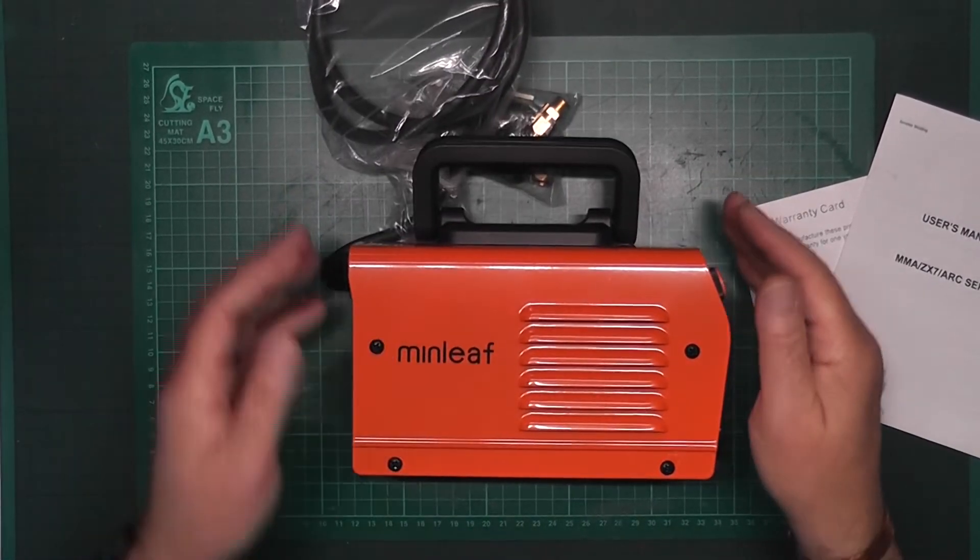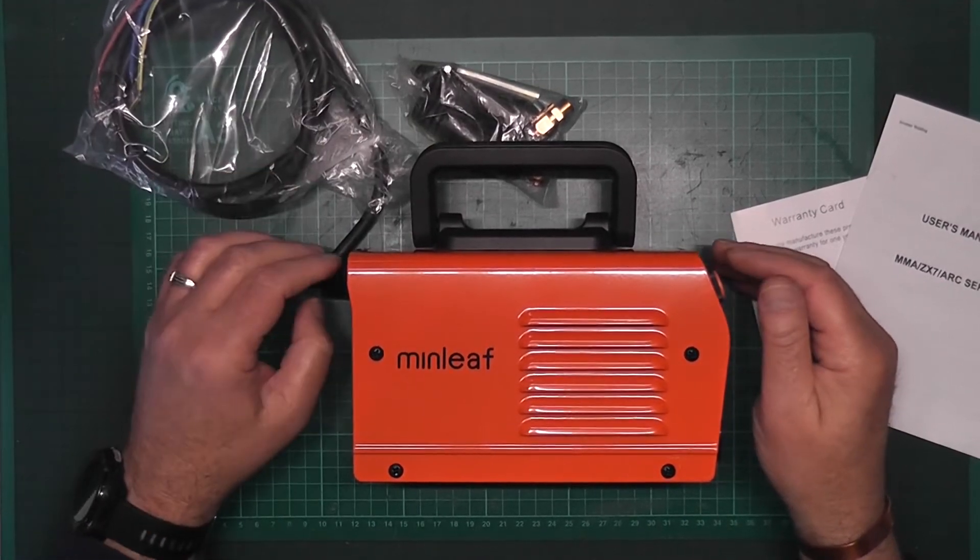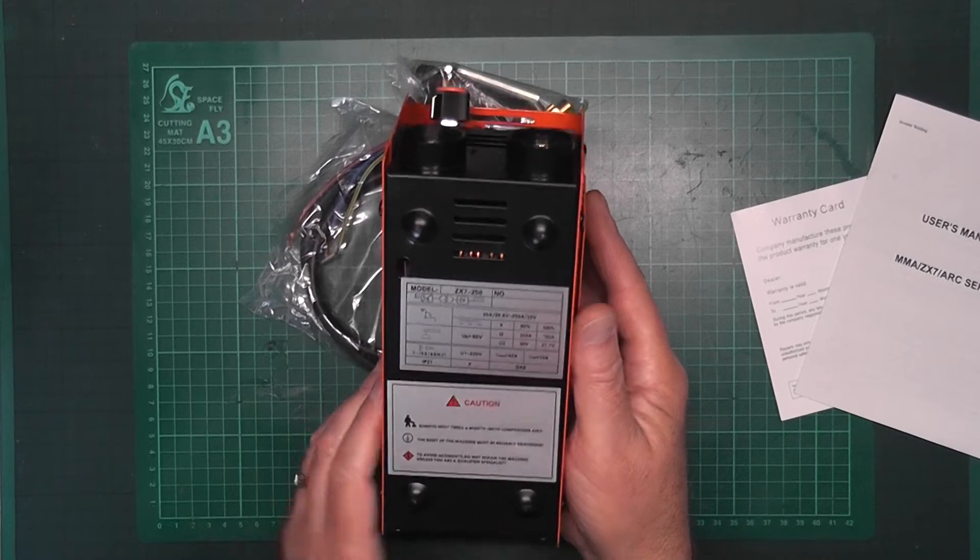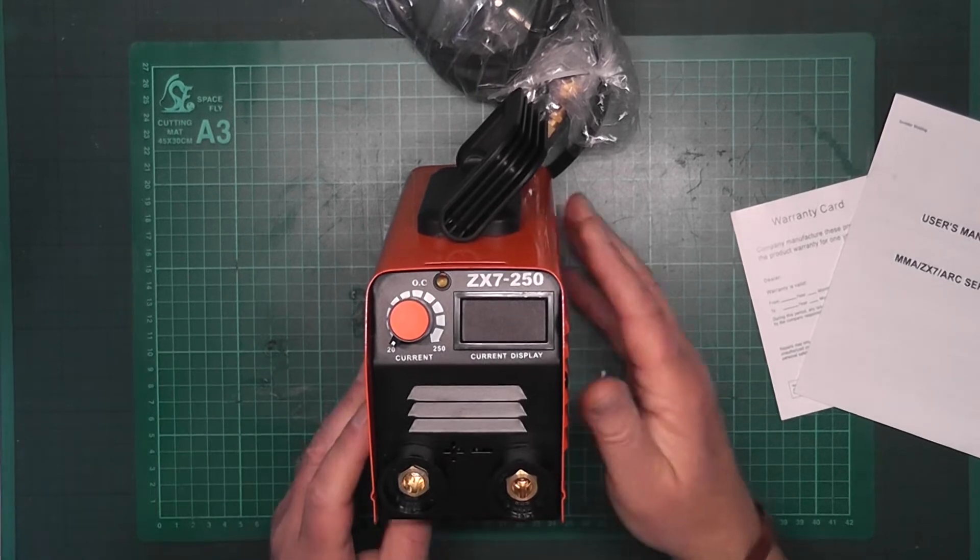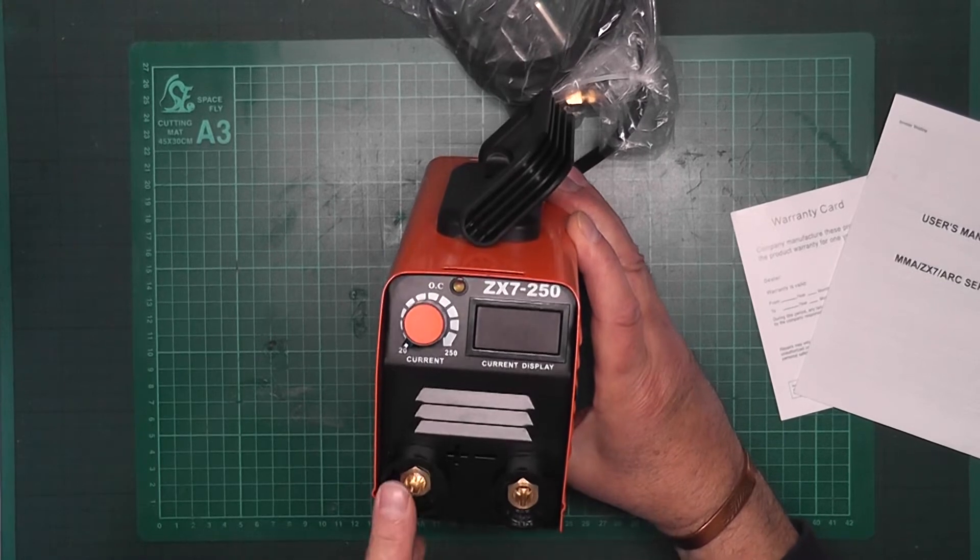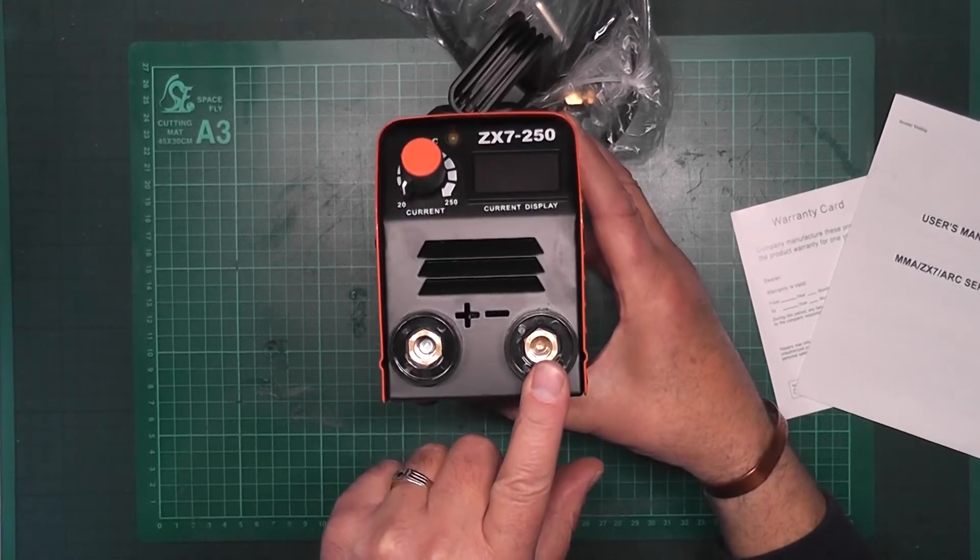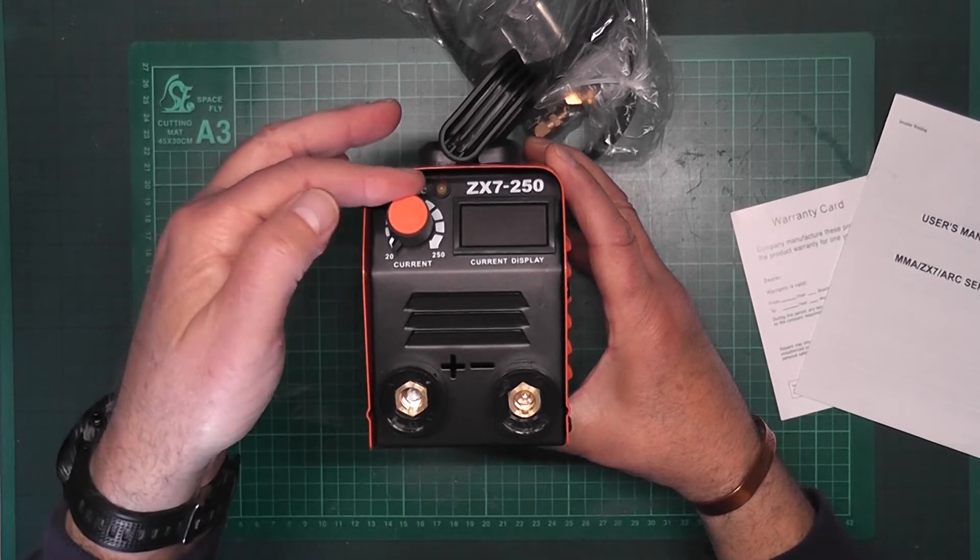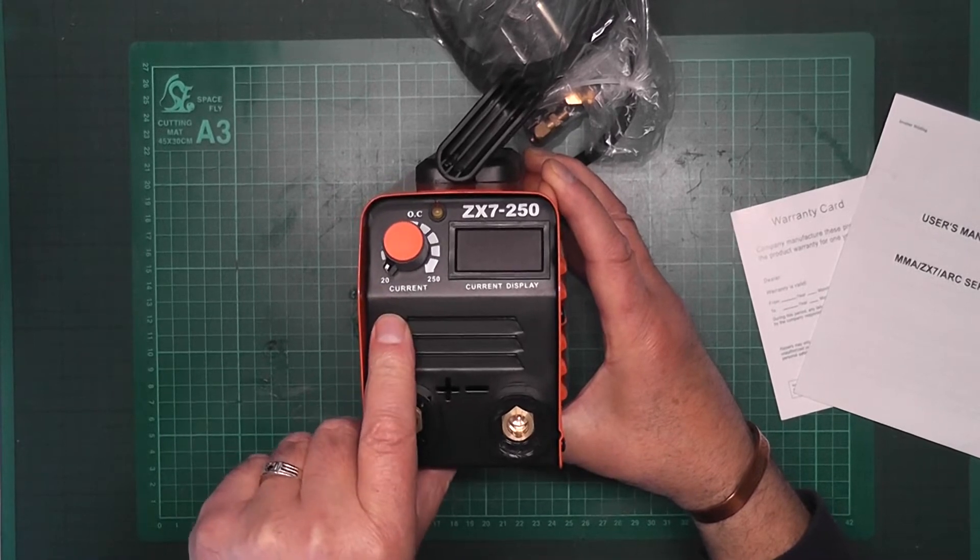You can see a name on it which may mean something or nothing - it's just a name they want to pick up. Information underneath I'm going to read that, and there's your little unit itself. It's very basic. There's your positive, your negative. Your positive is for your electrode, your negative is for your ground and earth. Then you have your current which is your amps and it adjusts from 20 to 250.